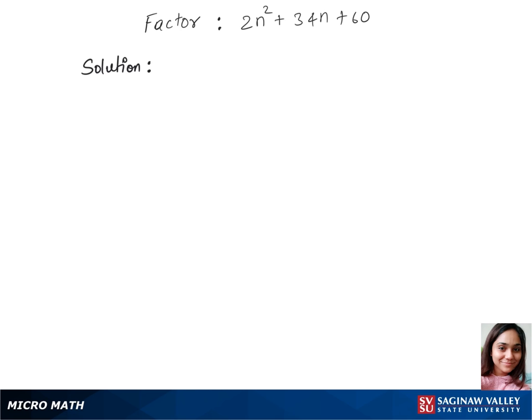Let's factorize this trinomial and we'll factor out 2 from this one. So we have 2 times n squared plus 17n plus 30.